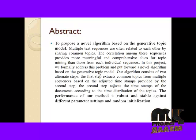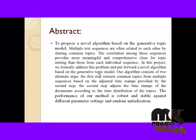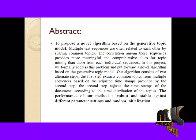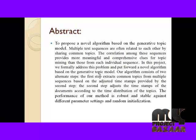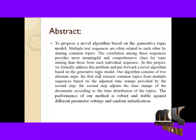The stop word removal process removes words such as 'a', 'the', and other common words. The stemming process removes suffix words such as 'ing', 'able', and similar endings. After that, we evaluate the common topics from multiple sequences. The second step adjusts the time stamps of the documents according to the time distribution of the topics. The performance of our method is robust and stable against different parameter settings.